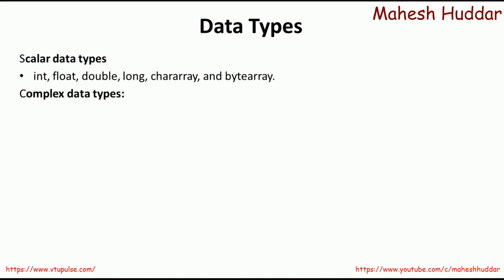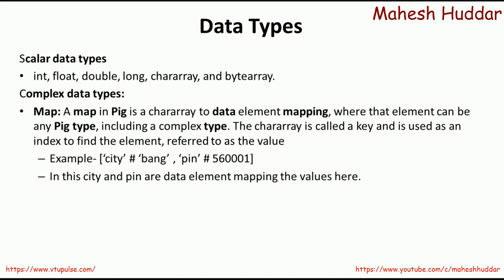Apache Pig also supports complex data types, and there are three of them. The first one is Map — it is like a dictionary in other programming languages, where we have a key that is used to index the values. The values can be of any Pig data type; it may be simple or complex. For example, city is a key and BANG is a value; PIN is a key and 560001 is a value. The important thing is the values can be of any type — scalar or complex.